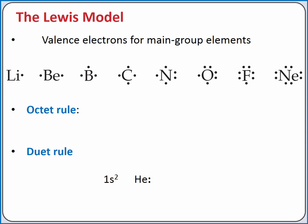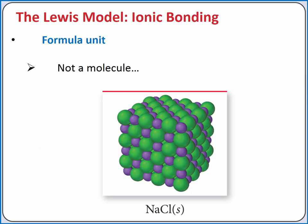A notable exception to the octet rule is for hydrogen. Since hydrogen's nearest noble gas is helium, hydrogen follows the duet rule. It wants two valence electrons to have the same electron configuration as helium. We represent an ionic compound using its formula unit.